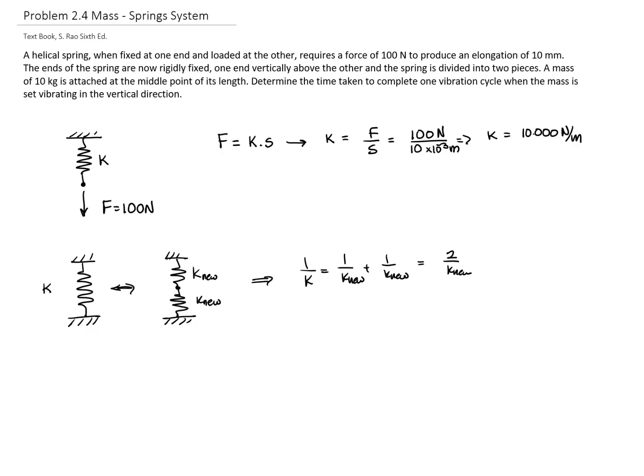So this is 2/k_nu. So, in order for those two systems to be equivalent, the new constant of the spring, k_nu, has to be equal to two times the original constant of the spring.